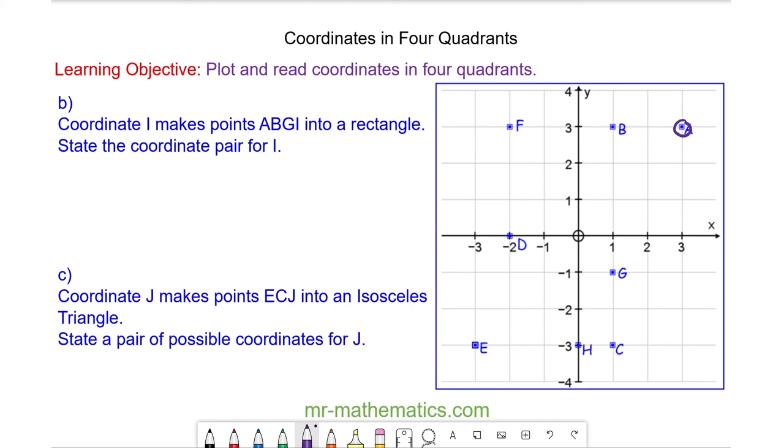We have A, B, and G. To make it into a rectangle, opposite sides have the same length and are parallel. So coordinate I must go here, and this is at three, negative one.